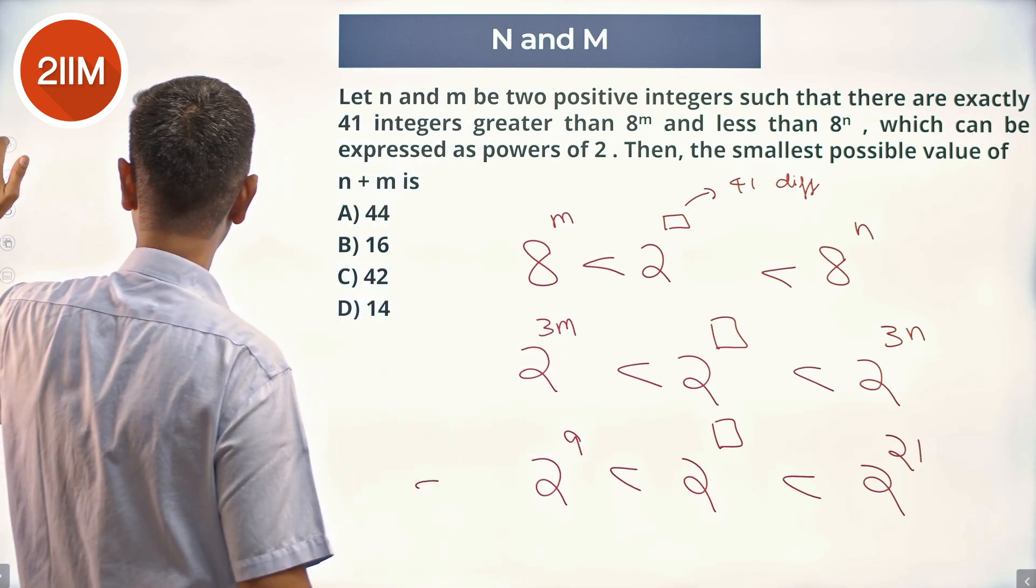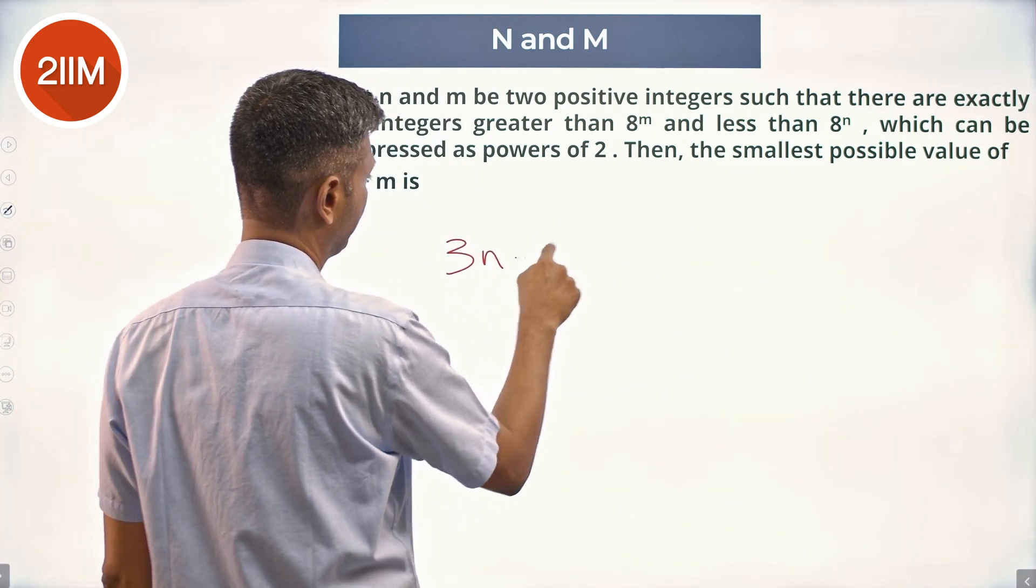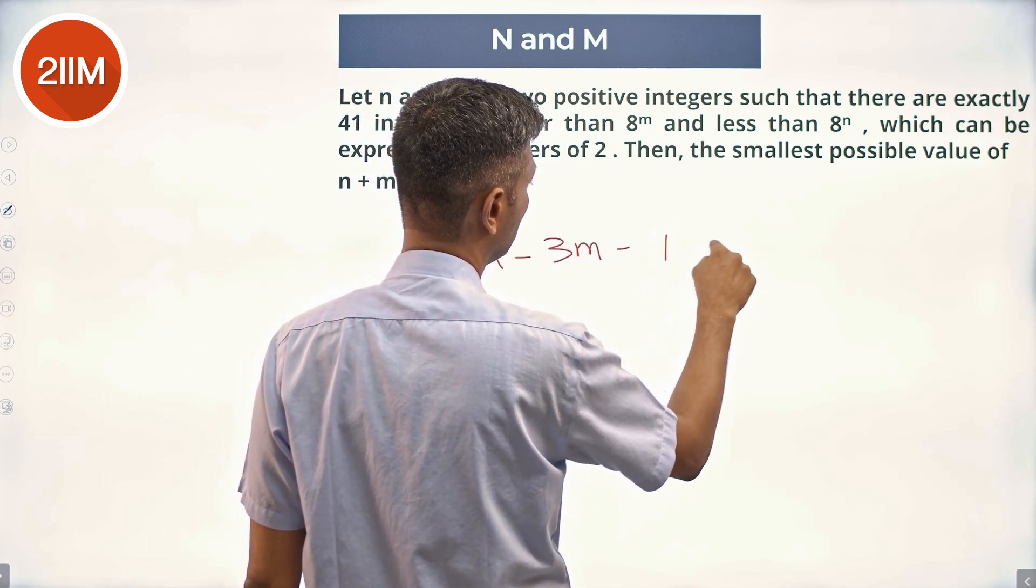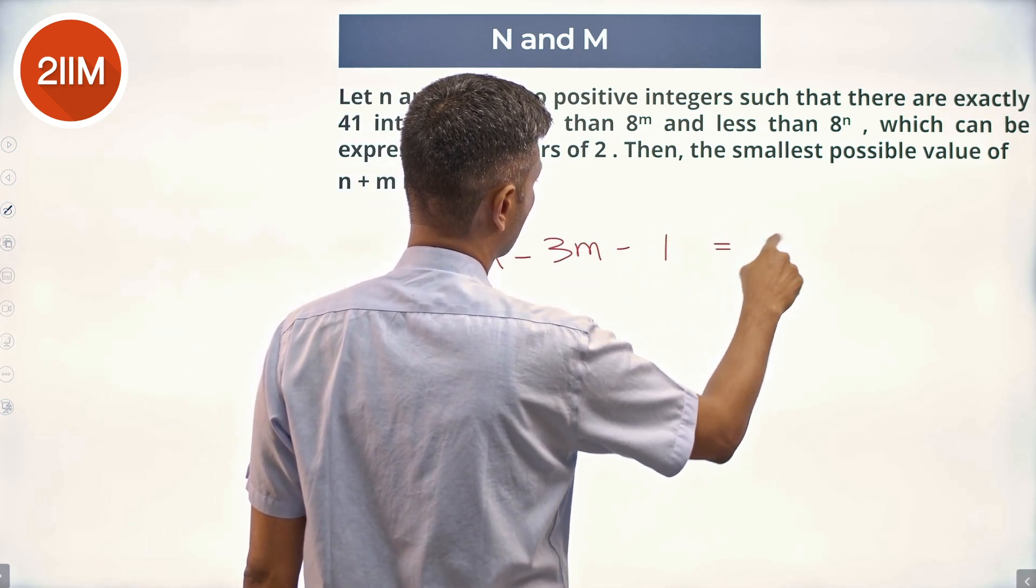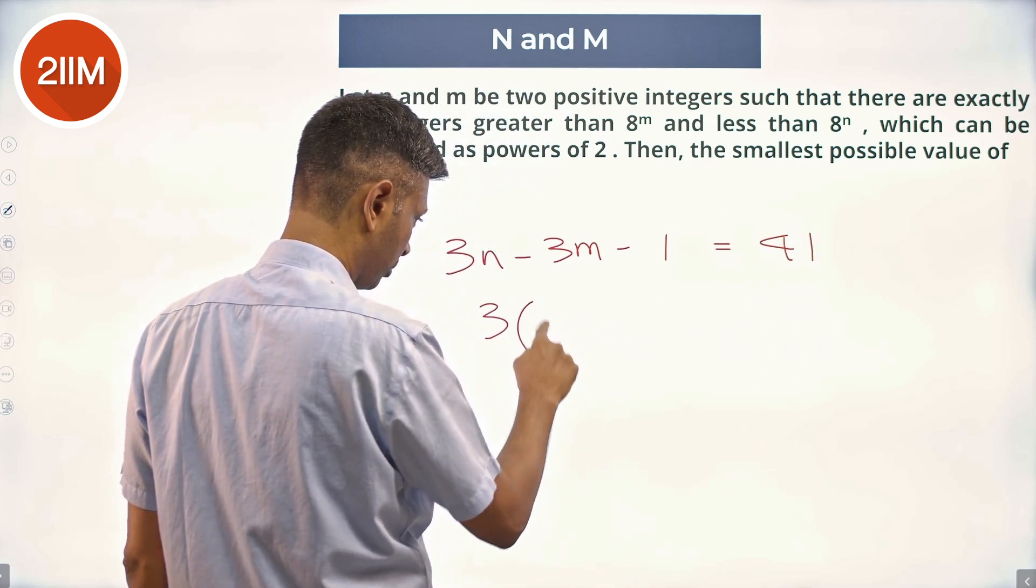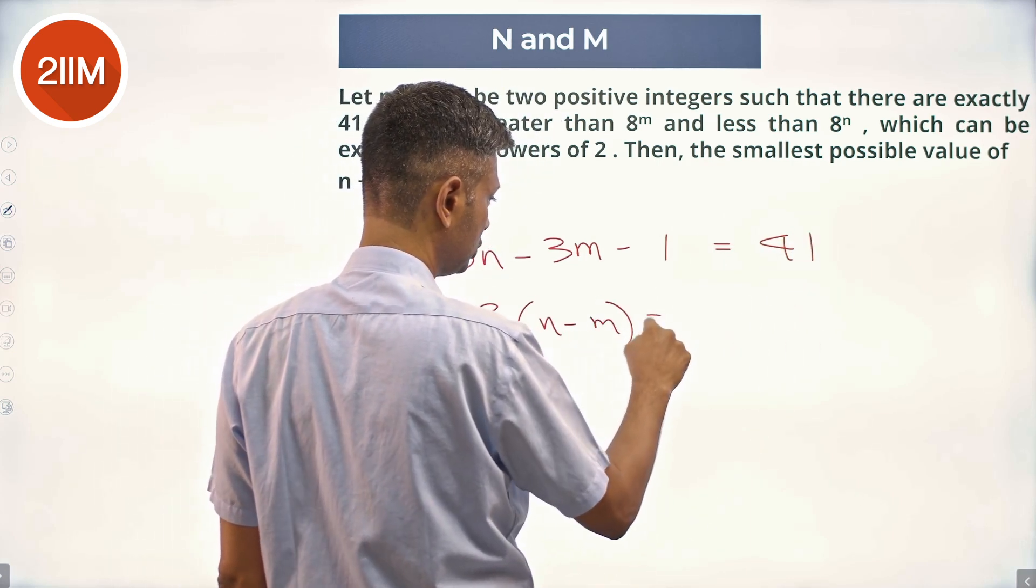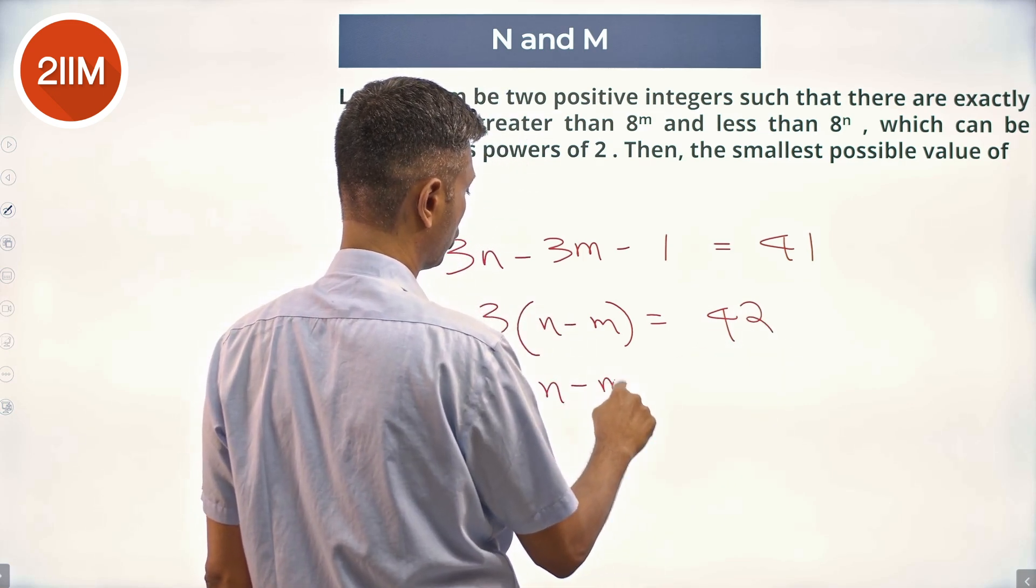Now we get quite beautifully 3n minus 3m minus 1 equals 41, or 3 times (n minus m) is 42, so n minus m is 14.